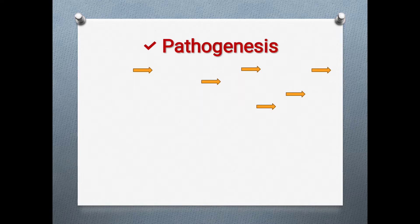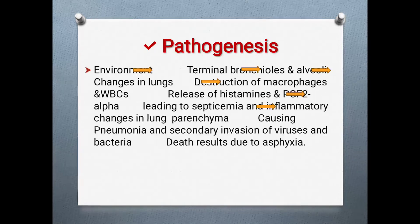Regarding pathogenesis — how this bacteria alters the physiological mechanisms of the animal — the organism is brought into the terminal bronchioles and alveoli, causing destruction of macrophages and white blood cells. There is also release of histamines and PGF2-alpha, leading to septicemia, meaning the presence of the organism in the blood, and inflammatory changes in the lung parenchyma.